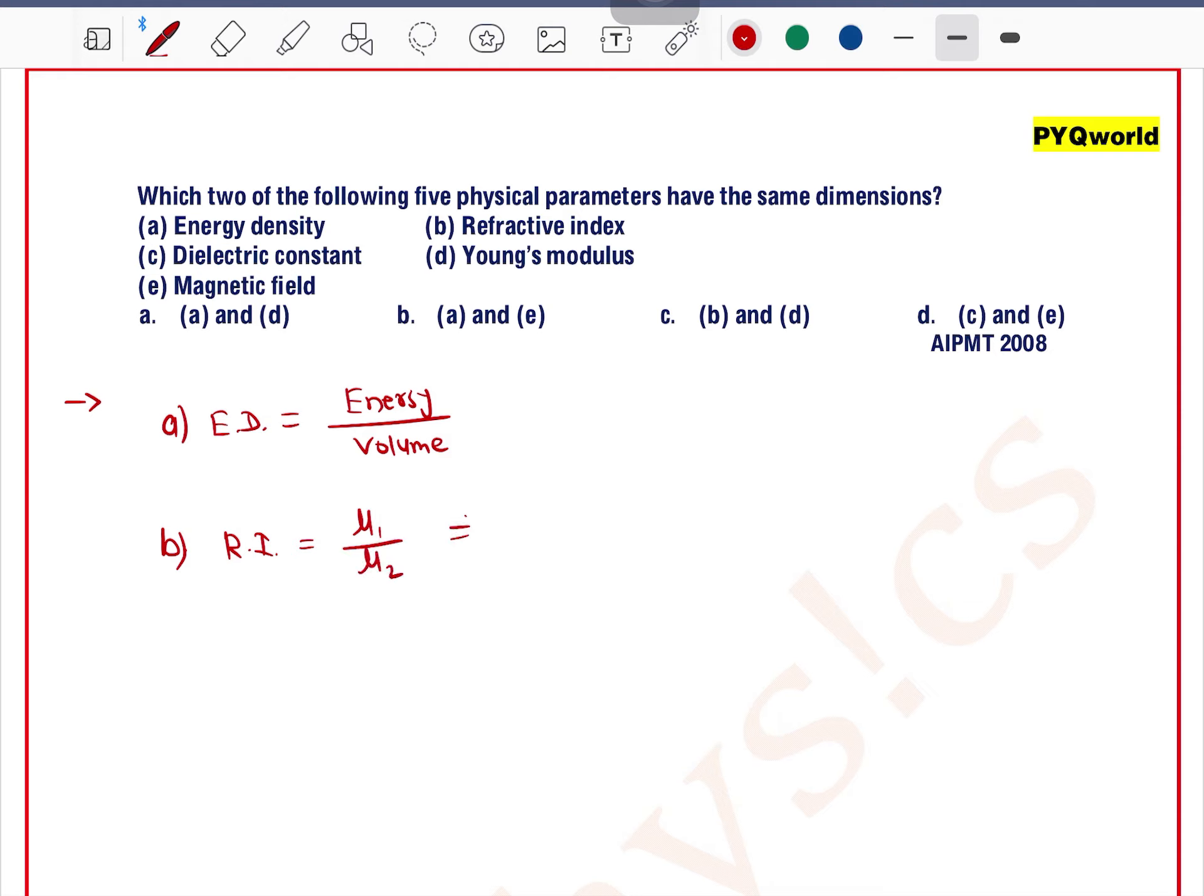So it is a dimensionless quantity. Option C: Dielectric constant. Dielectric constant is epsilon r, which is epsilon by epsilon naught. It is again a ratio of same quantity, so it is a dimensionless quantity.